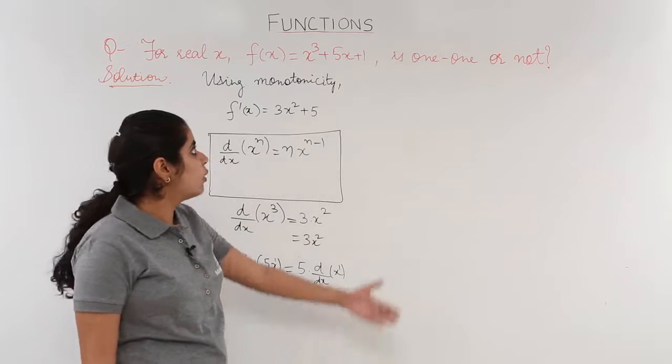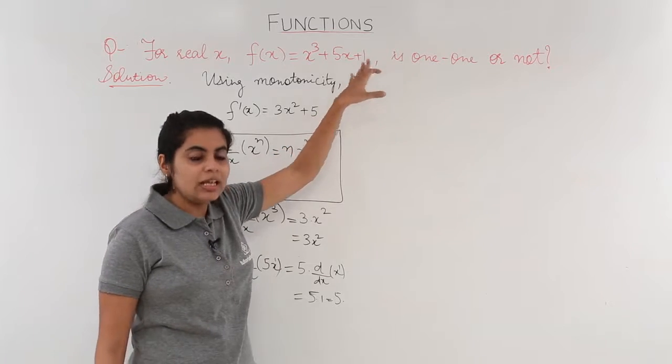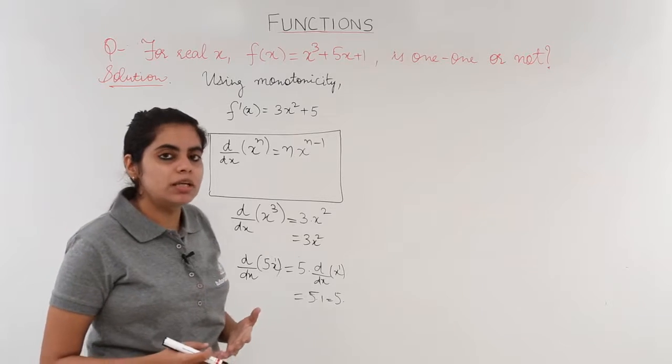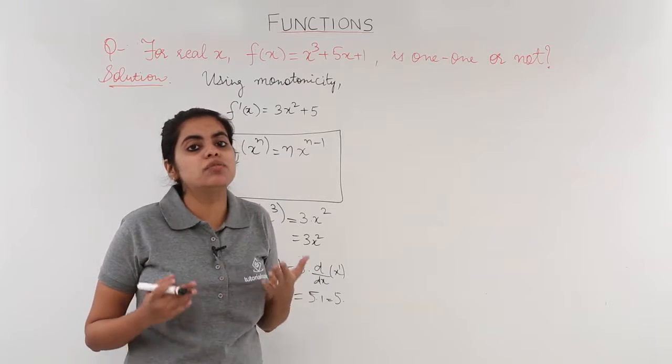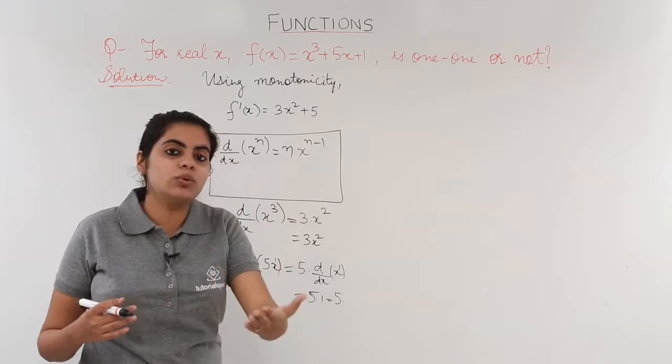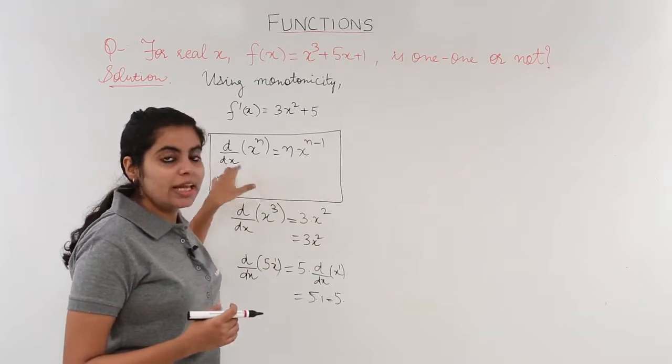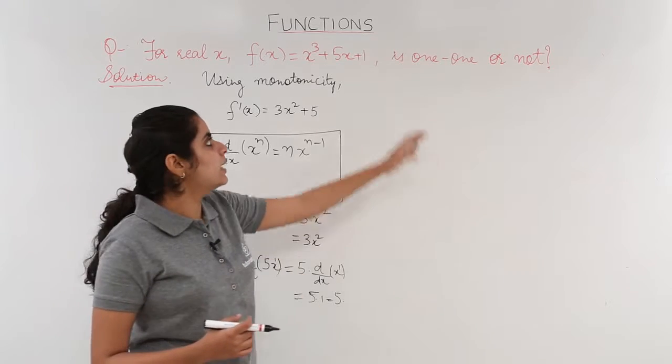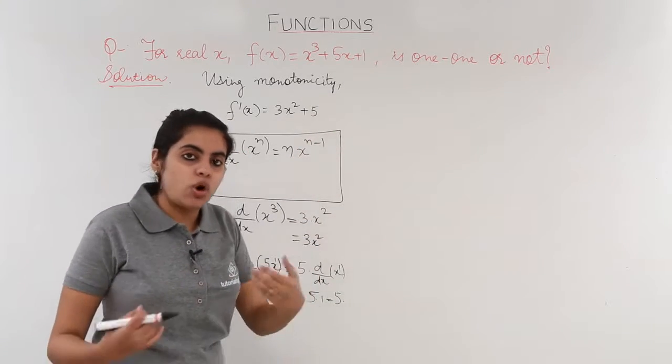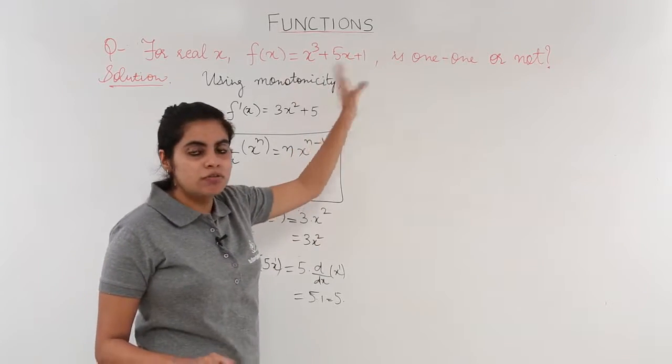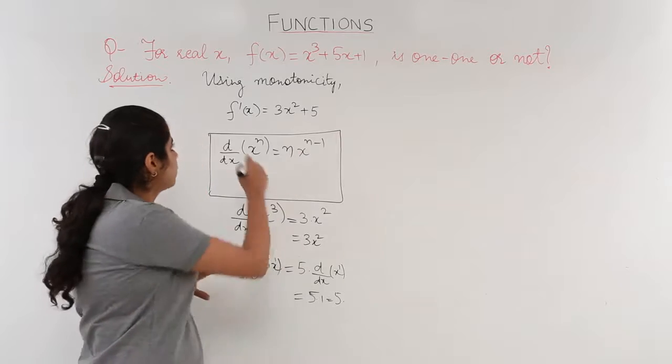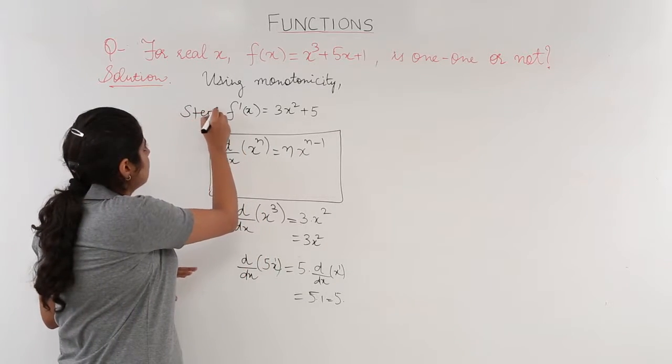Similarly, you can find the differentiation of 1 for better understanding and remembrance. You should always remember that the differentiation of any variable with respect to that same variable is always 1. And differentiation of any constant is always 0. So automatically the constant gets vanished away. This was the first step. First step is finding the derivative.